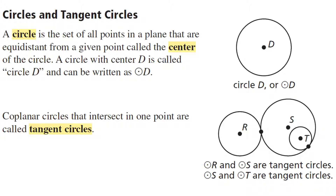Notice that circles that touch in just one point are called tangent. They can touch at one point on the exterior, such as circle R and circle S. Or you can have a situation like circle S and circle T, where circle T is inside circle S but they touch at exactly one point — so we say they are tangent circles.